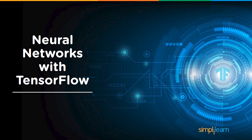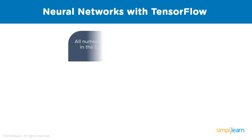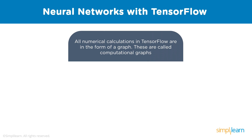Now let's dive into neural networks with TensorFlow. Before we start, let's see how computation is done in TensorFlow. All numerical calculations are done using computational graphs. Computational graphs are graphs where each node corresponds to a mathematical operation, performed on the input tensors. Computational graphs are a way of expressing and evaluating a mathematical operation, and they allow TensorFlow to perform lazy computing.